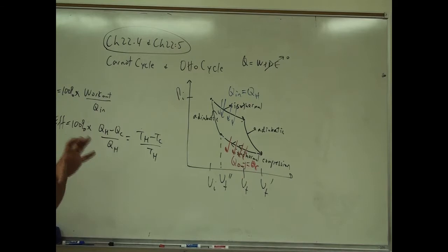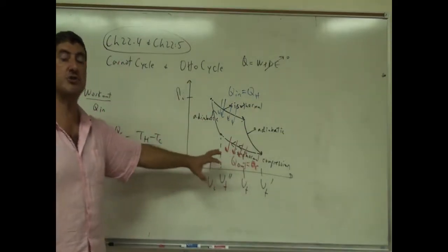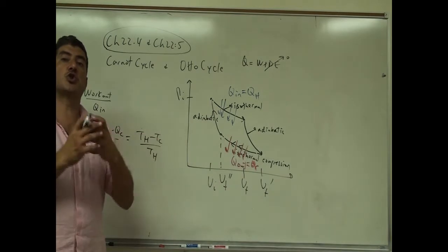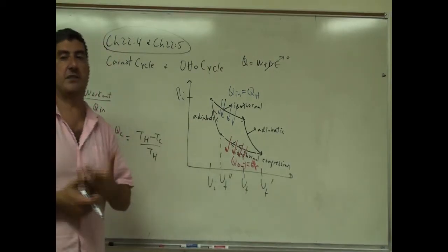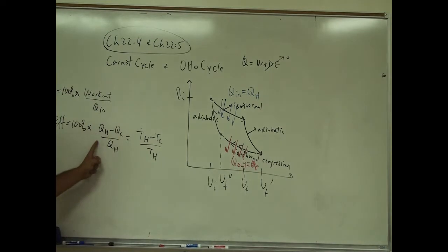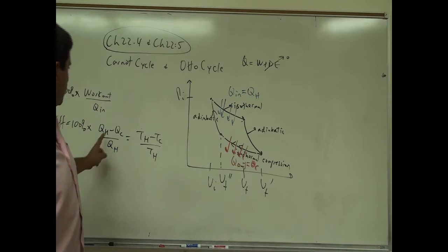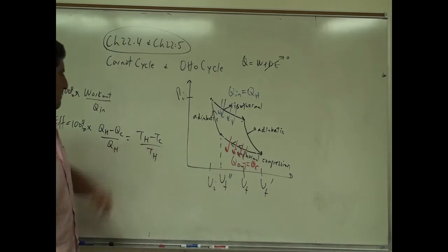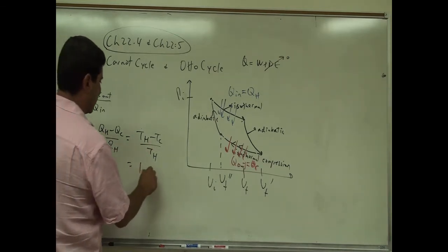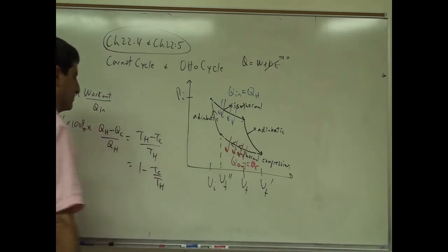When I do an example with numbers, I'll actually solve the efficiency and show that the numerical result matches this formula as an indirect proof. So the efficiency equals 1 minus T cold over T hot. Now let's talk about the Otto cycle.